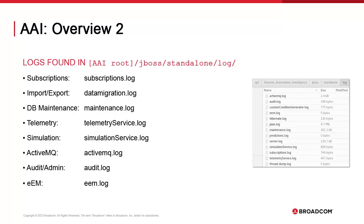The next logs are narrow in scope. We use them to troubleshoot certain technical areas or feature sets. They are subscription services, the import-export processes to output data to flat files, the database maintenance procedures configured into ConfigTool, telemetry which Broadcom uses for usage tracking and billing, the simulation service available to Autosys users, ActiveMQ which is a component of the subscription service, and the audit log of admin actions. Finally, EAM shows connections to the EAM domain.